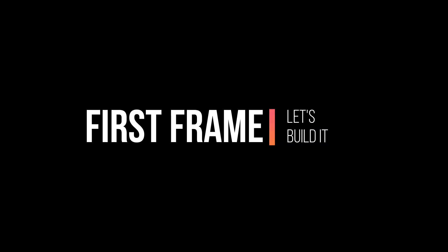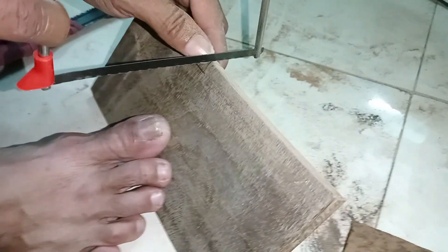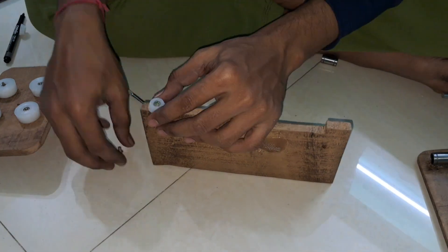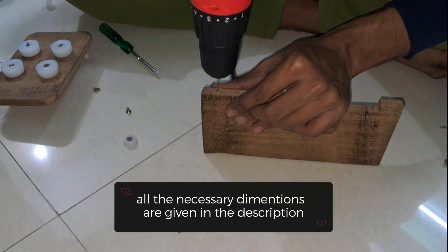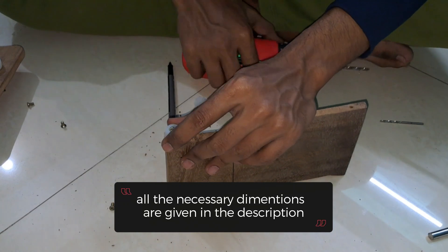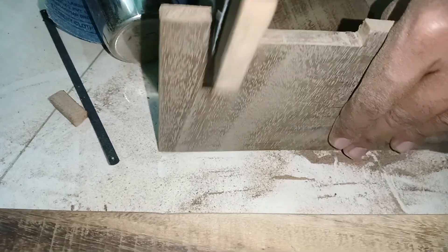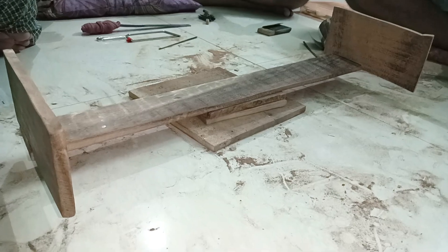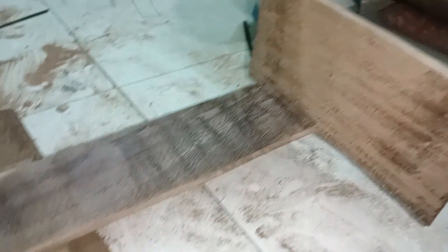Let's get started with building the first frame. Be sure to make smooth and accurate cuts for a neat and solid assembly. You can find all the necessary dimensions in the description below. Design a strong rectangular frame with wood for both the base and the vertical supports. Be sure to make smooth and accurate cuts for a neat and solid assembly.